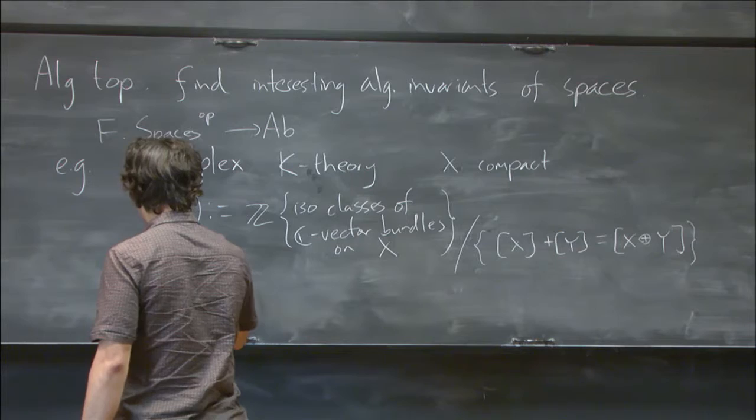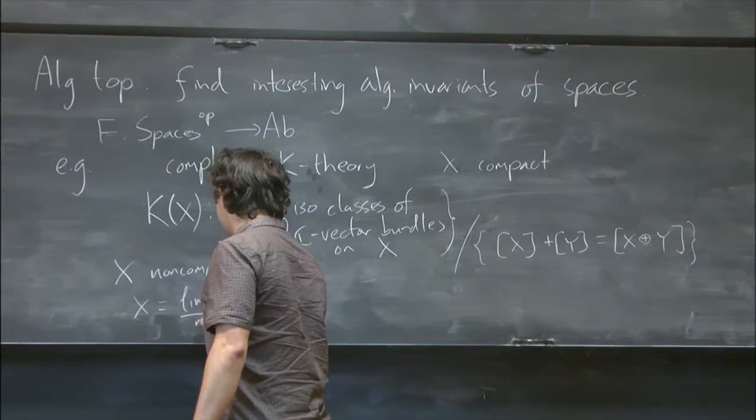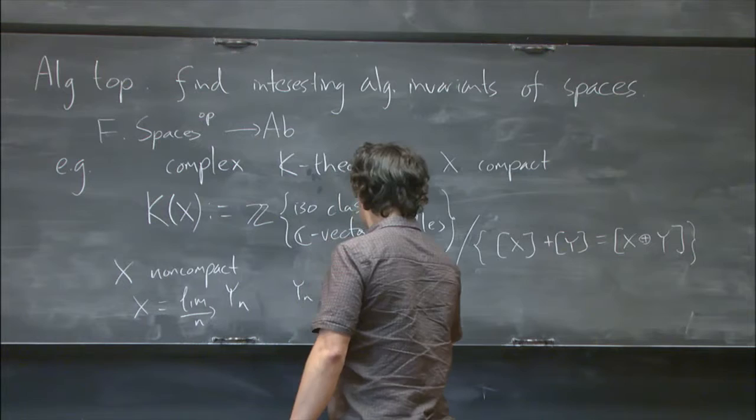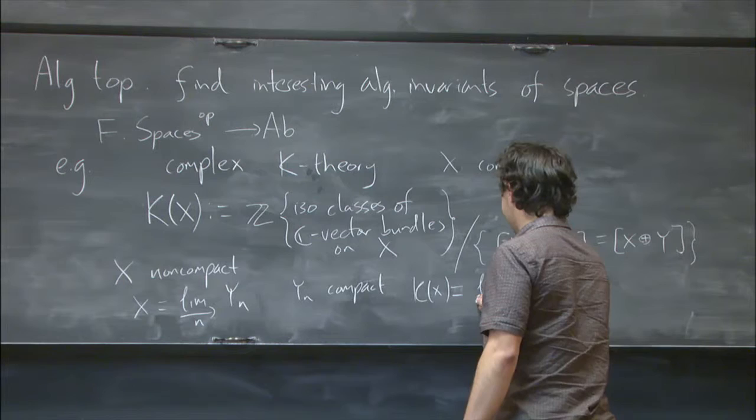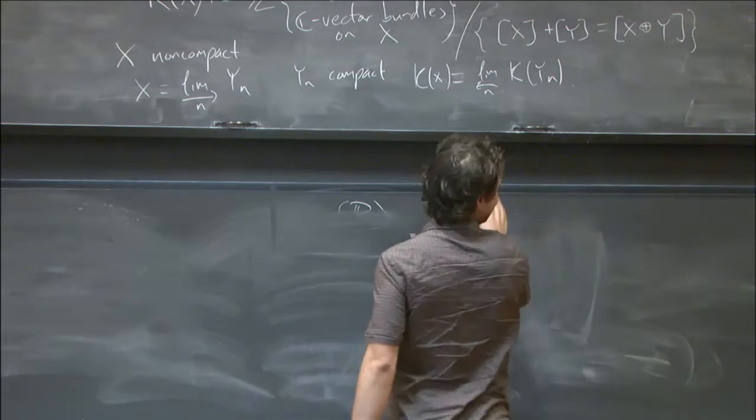If I have a non-compact space, then this doesn't quite work, and I have to fix it by writing X as a union of compact subspaces and defining the K-theory of X to be the inverse limit of these K-theories. So there's an example of a cohomology theory and a very nice one too.